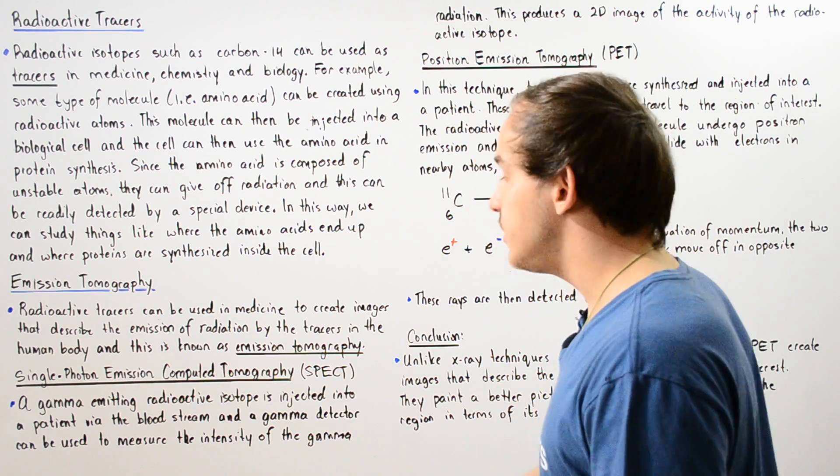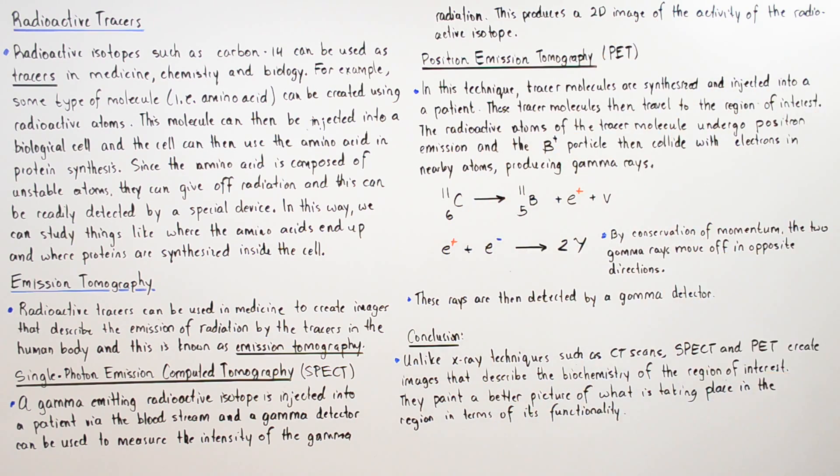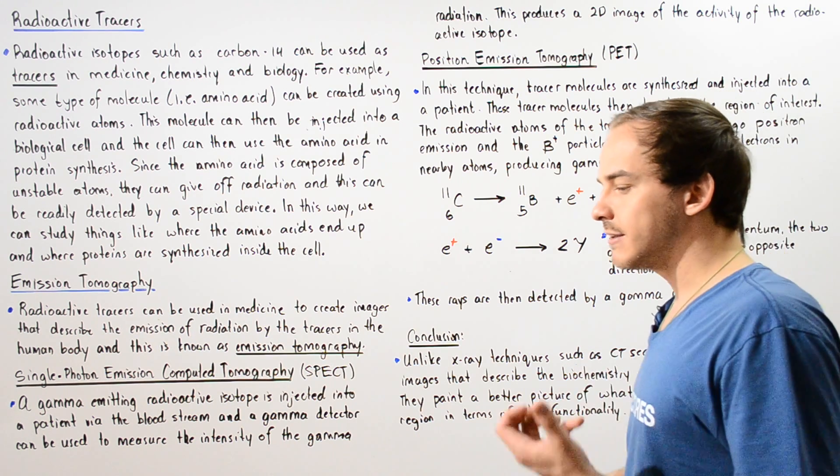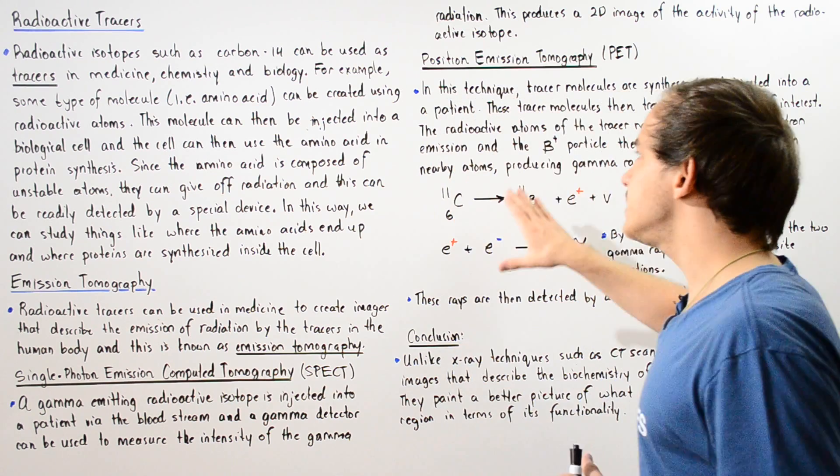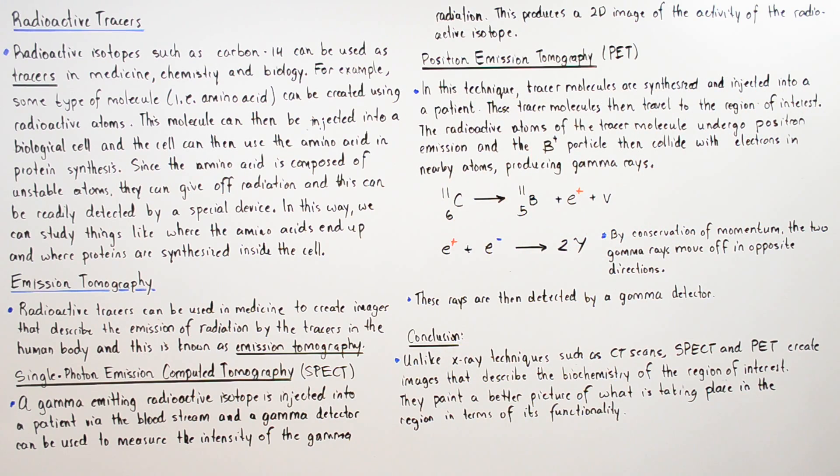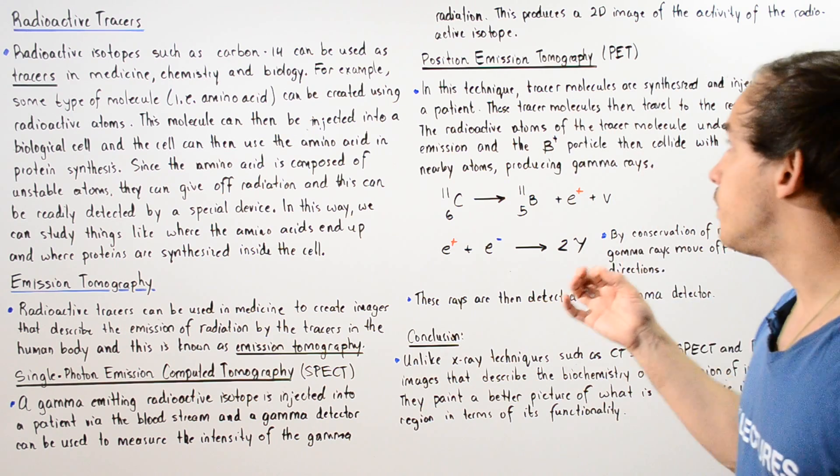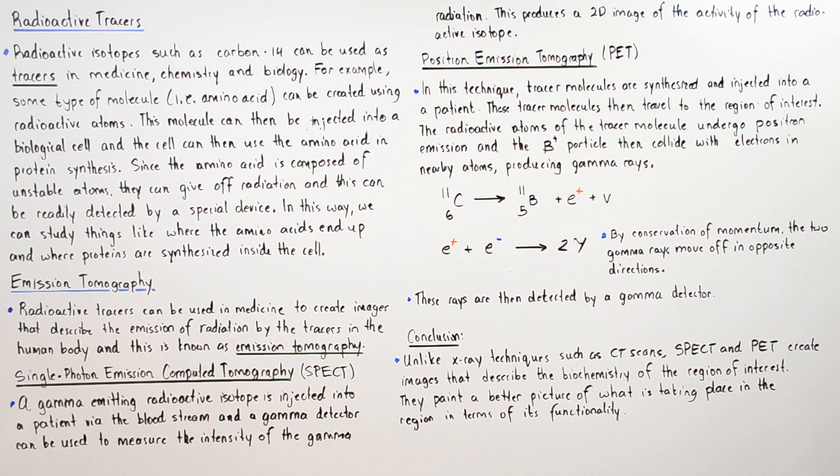This can be used to produce a two-dimensional image of the biological activity of that radioactive isotope. Now let's examine the second type of technique known as positron emission tomography.